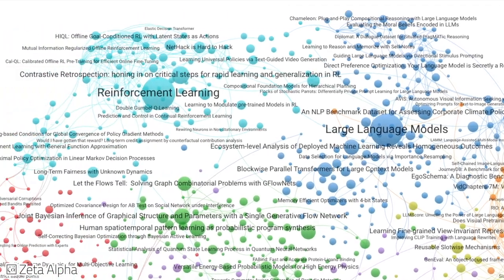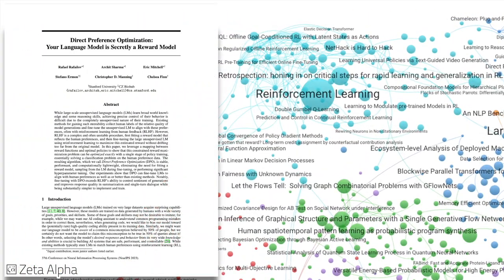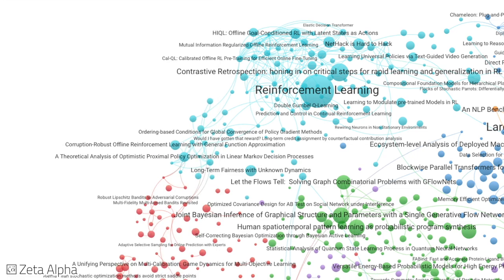Next up, in the field of reinforcement learning, the direct preference optimization algorithm is proposed to align a model with human preferences without the use of an explicit reward model, while being equally effective as PPO-based methods like RLHF.